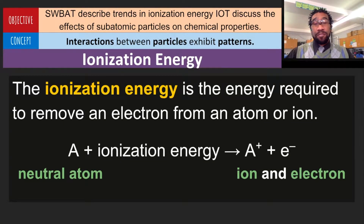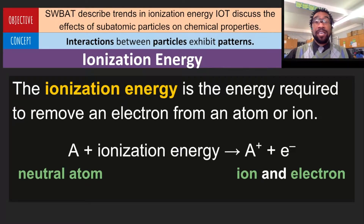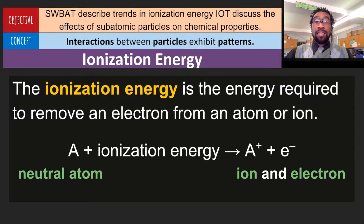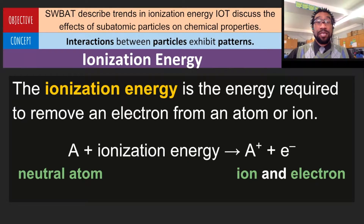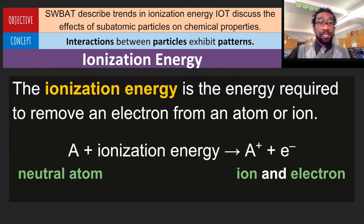Ionization energy. You need to know that ionization energy is the energy required to remove an electron from an atom or an ion. So normally you start with a neutral atom where the number of protons and the electrons are the same. And then you add enough energy to the atom to the point where the electrons absorb this energy, and one of the electrons or more electrons will actually jump off of the atom, never to return again. So you ionize it, and you create what's called an ion, and the electron separates.